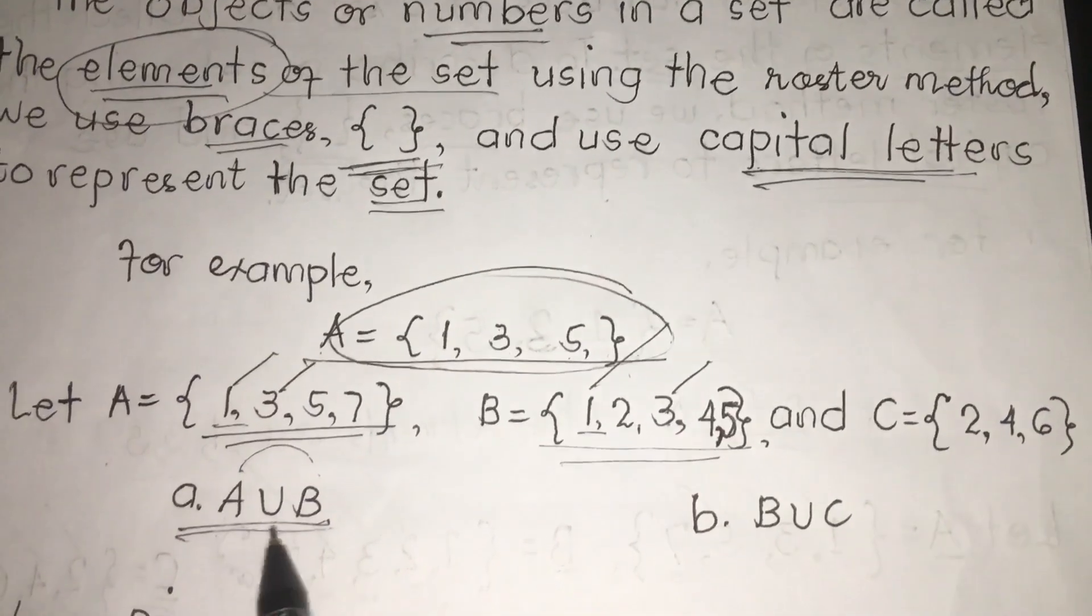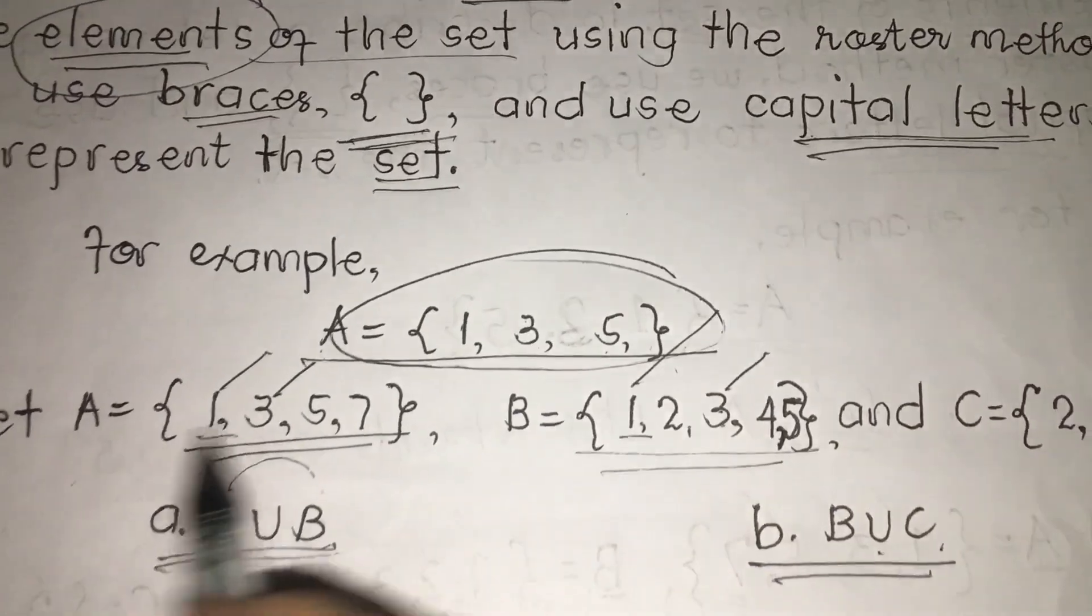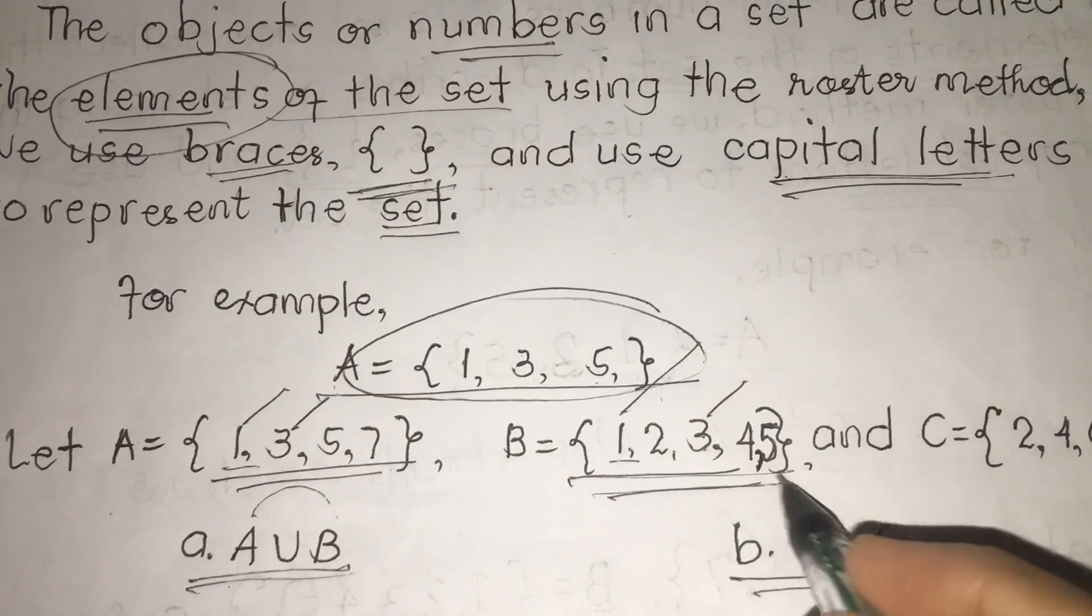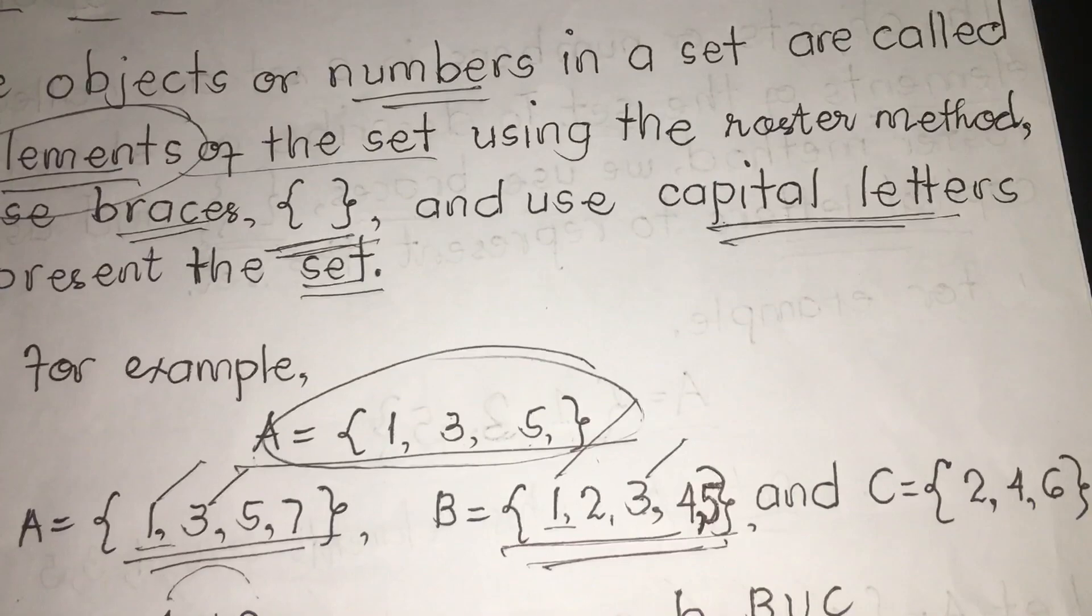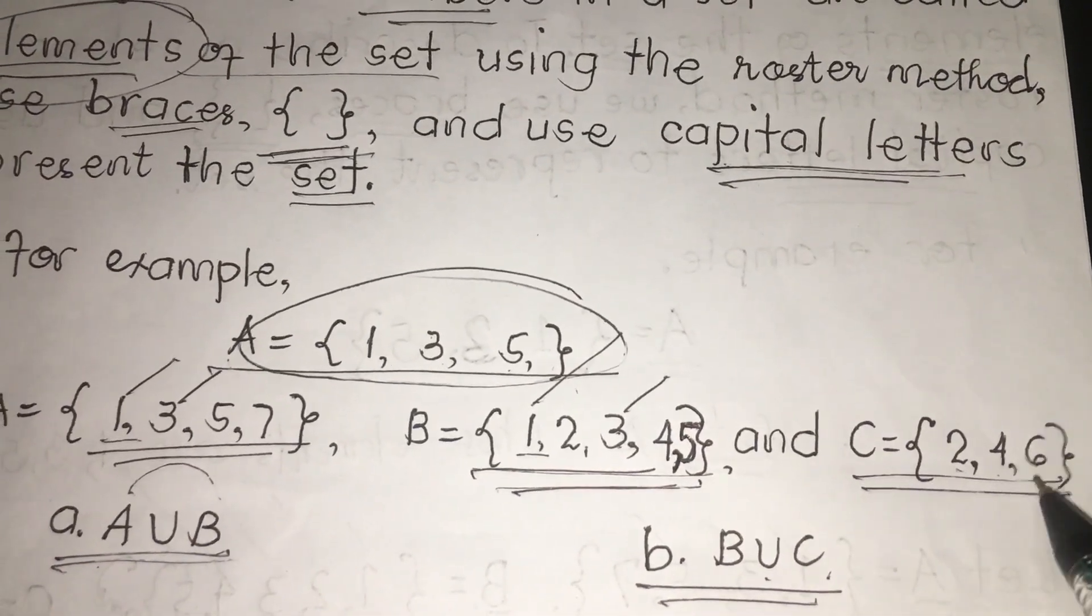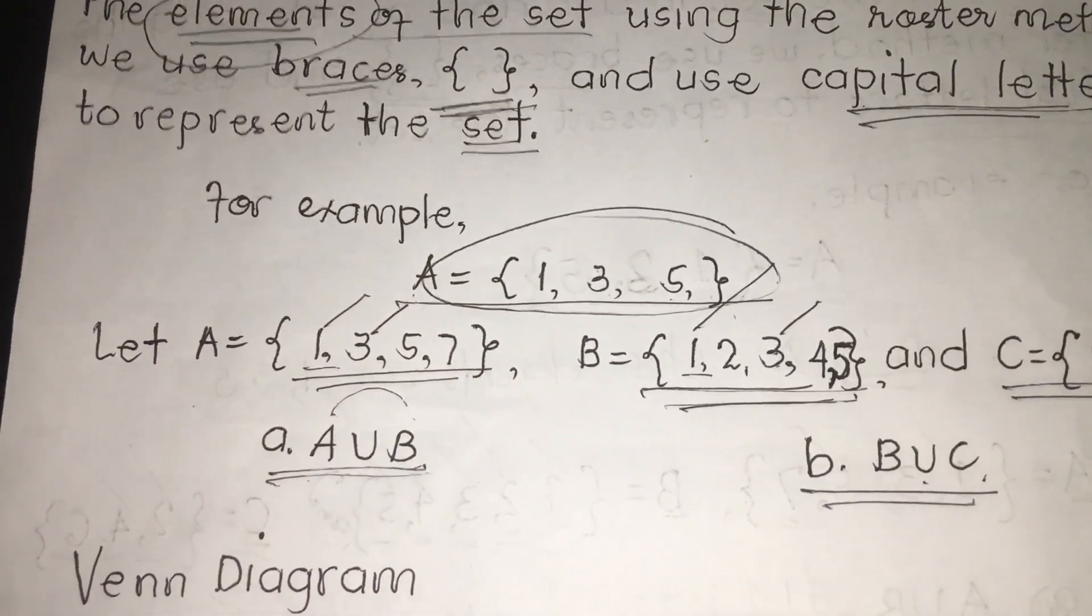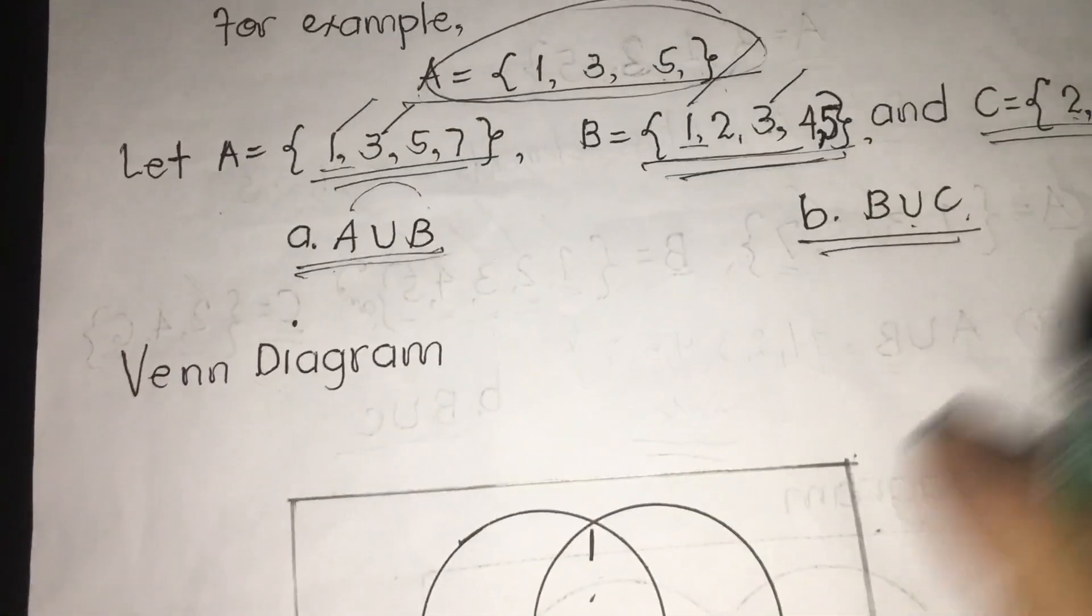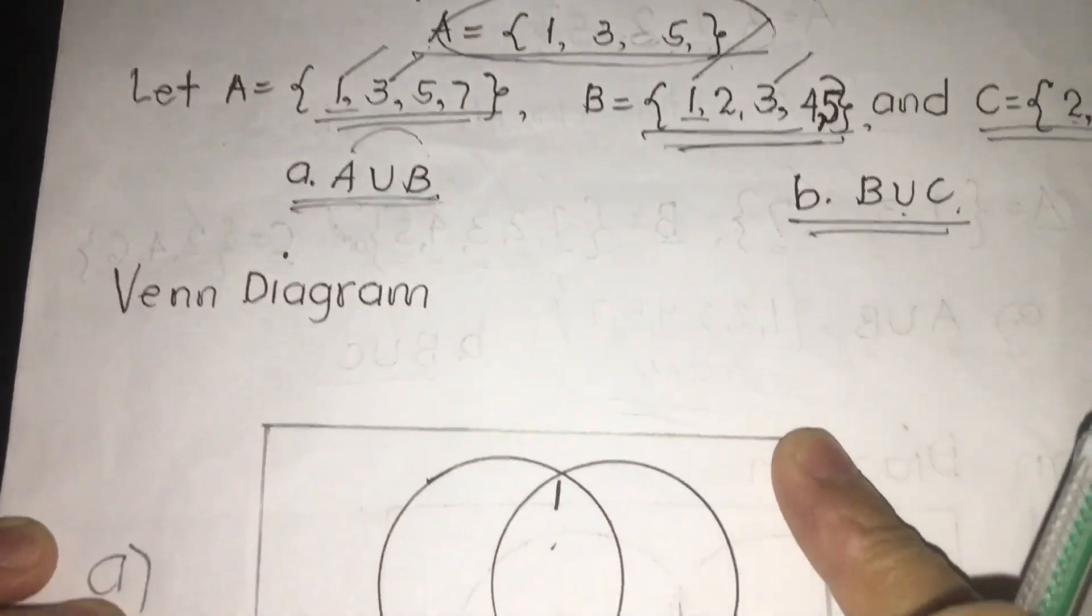We have A union B and B union C. We have first the following given: A equals 1, 3, 5, 7. B equals 1, 2, 3, 4, 5. And C equals 2, 4, 6. We have the following braces. Please follow. So we have first a Venn diagram. I'm going to show you how to apply Venn diagram. Venn diagram using circles. Circles represent the number of objects.